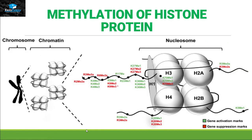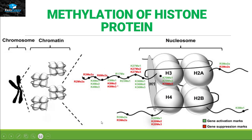Methylation of histone protein: histone proteins are present inside the chromosome in the form of a nucleosome, in which 8 histone proteins are surrounded by the DNA molecule. These histone proteins play a major role in the process of transcription. The histone tails are modified with methyl groups — all the green methylation marks indicate that when the methyl group is attached to those positions, it will activate the gene for transcription. If methylation is occurring on the red positions of lysine amino acid, it will halt the process of transcription. So the major function of histone protein methylation is to act as a regulator for transcription.